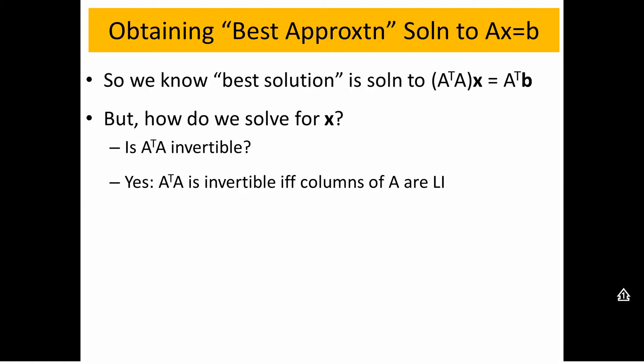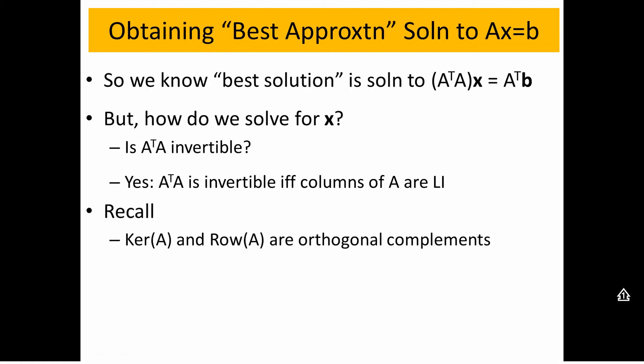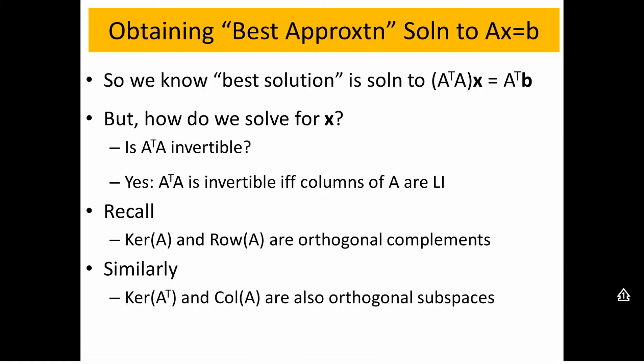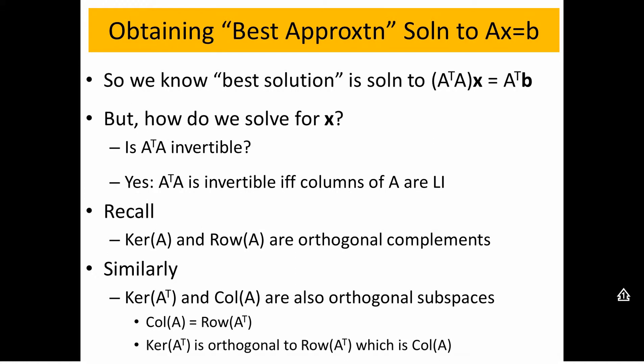In order to show that, we need a bit of background. We remember from last time that the kernel of A and the row space of A are orthogonal complements. Notice that the row space of A is the column space of A transpose. So we make the claim that the kernel of A transpose and the column space of A are orthogonal complements. The column space of A is the row space of A transpose, and the row space of A transpose is the orthogonal complement of the kernel of A transpose. Therefore, the kernel of A transpose is the orthogonal complement of the column space of A — and that's a very important fact.